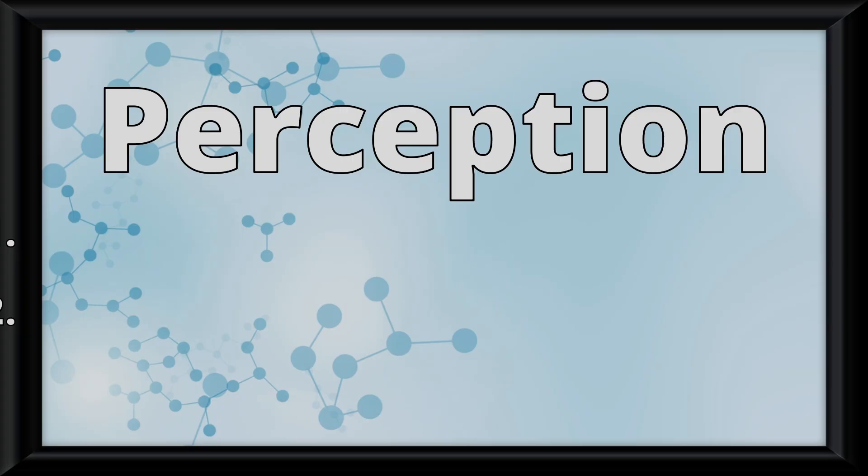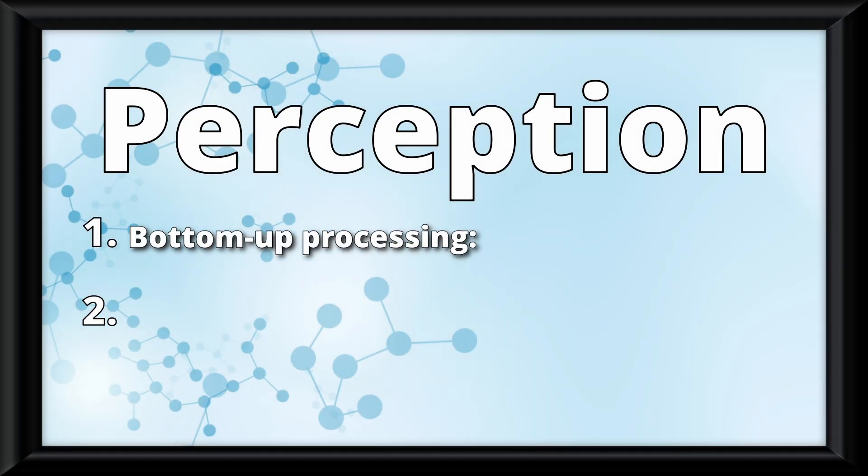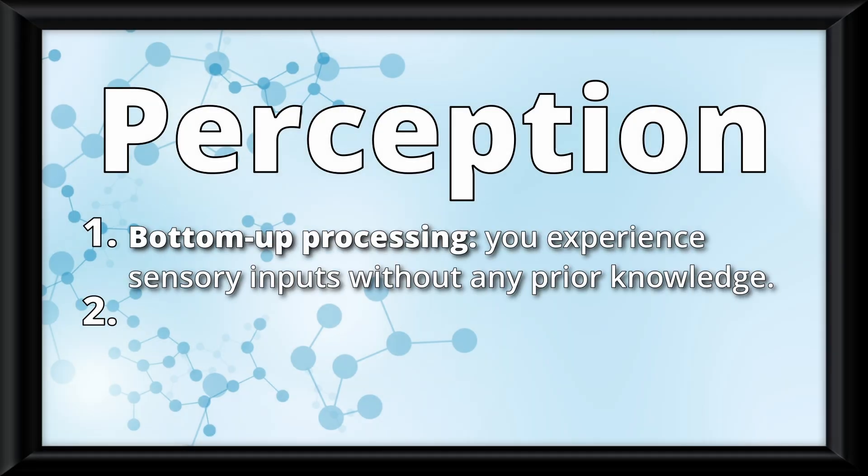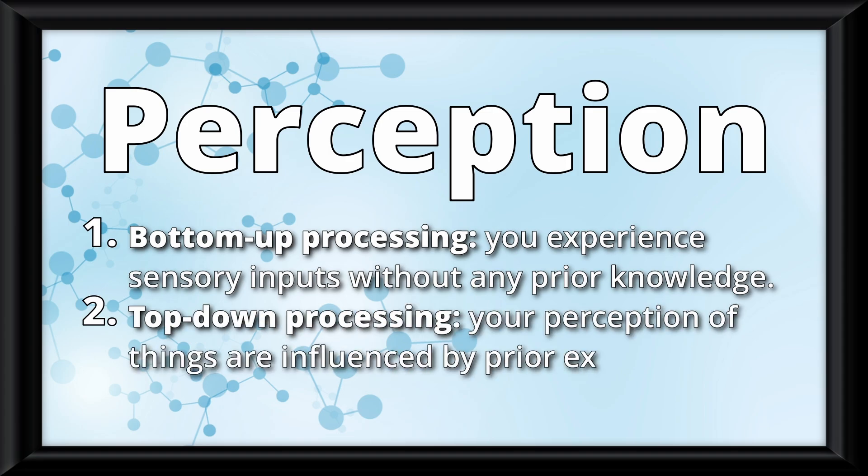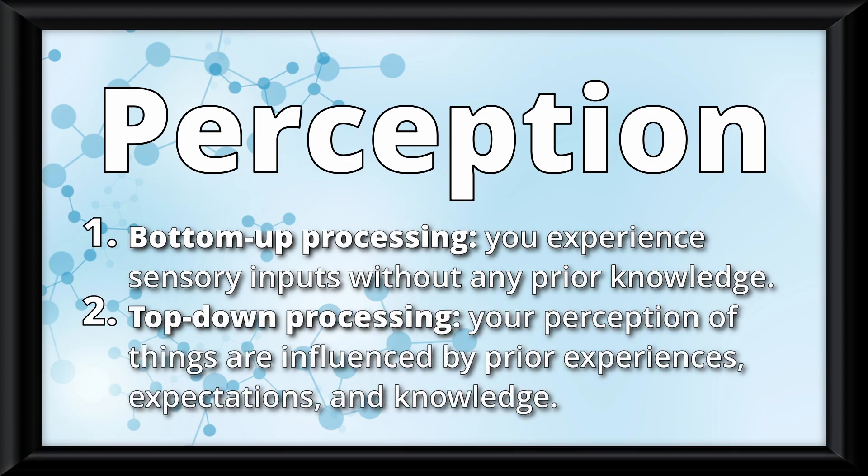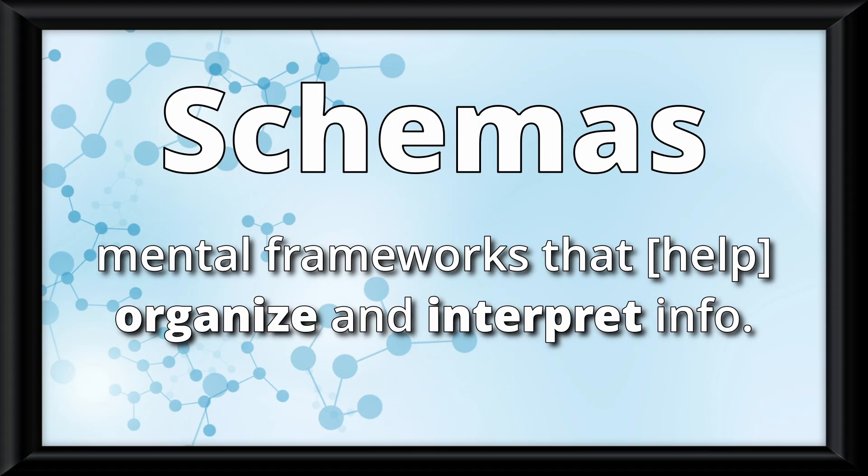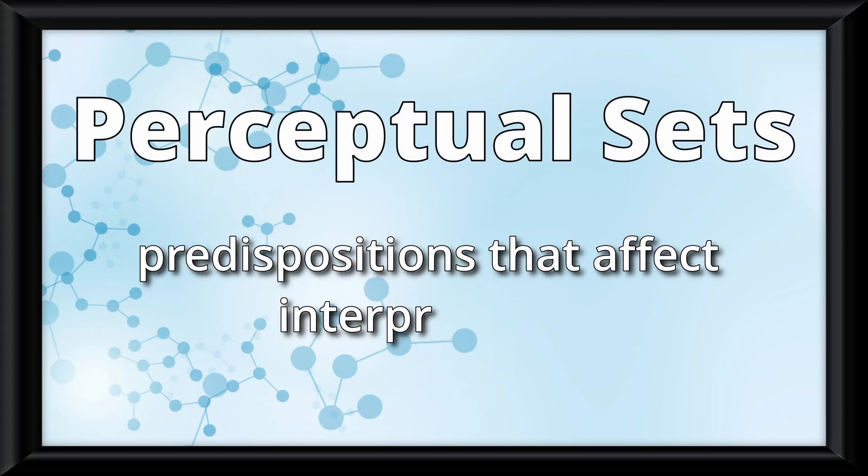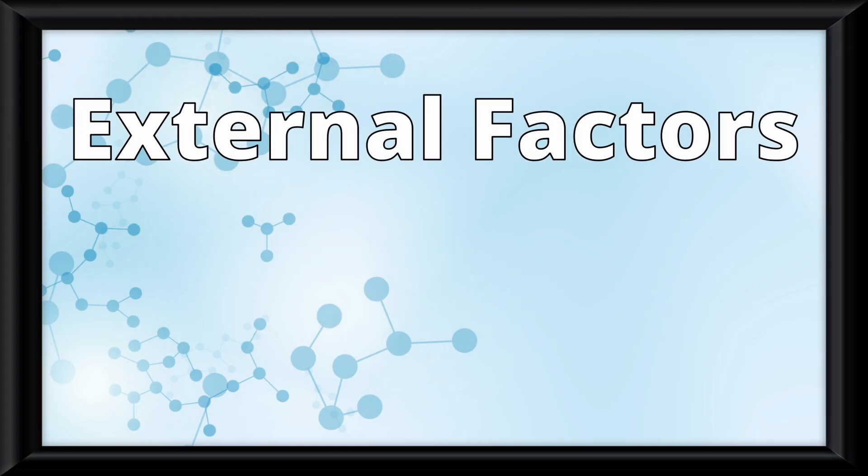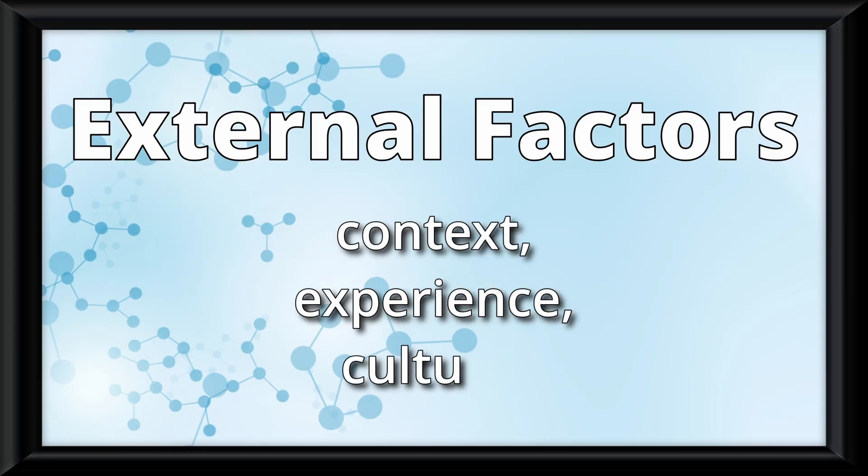Perception involves two things: bottom-up processing, which is where you experience sensory inputs without any prior knowledge, and top-down processing, which is where your perception of things are influenced by prior experiences, expectations, and knowledge. Internal factors of perception include schemas, which are mental frameworks that organize and interpret info, and perceptual sets, which are predispositions that affect your interpretation. External factors include context, experience, and culture.